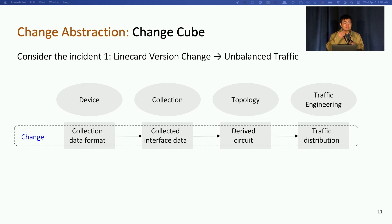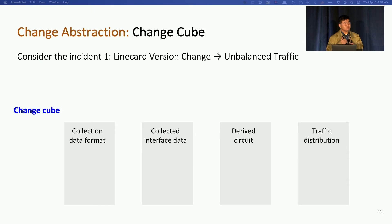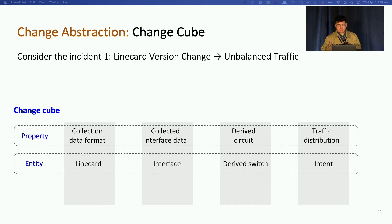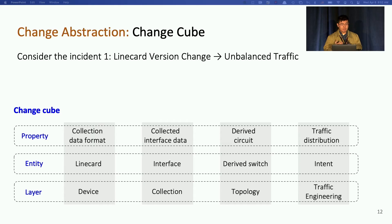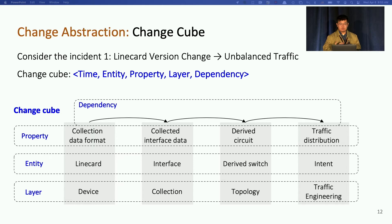So here, as human beings, we can easily identify these changes easily, but in order to let computers track them, we need a uniform representation. We use Change Cube with different properties, entities, and layers. The property and layer basically describe which part of a network instance get changed. The layer describes the location where change happens. We can also explicitly draw the dependencies for these Change Cubes. For example, the collection data format is correlated with the collected interface data, because as understanding the right format is required to parse and get the right interface data. Similar correlation applies to the derived circuits and traffic distribution. Further, the collected interface data directly derive or generate the circuit in the topology, and we call it a derivation dependency.